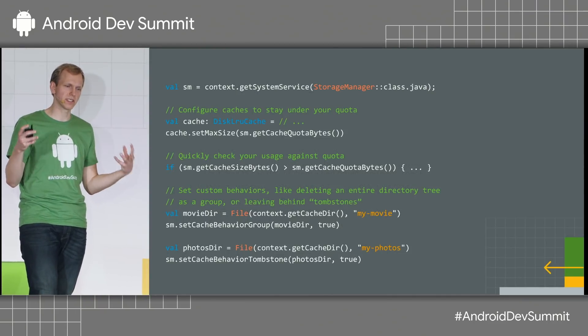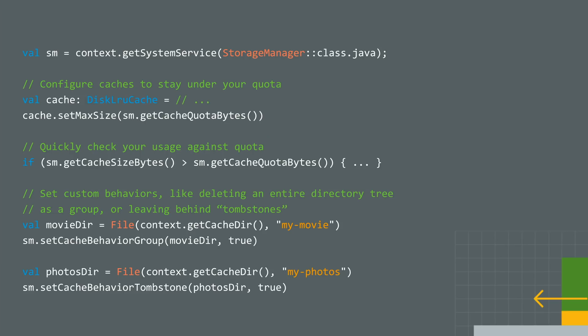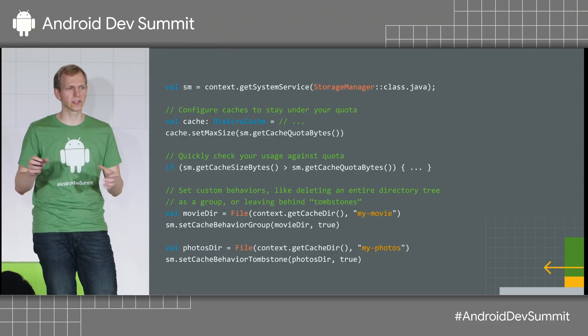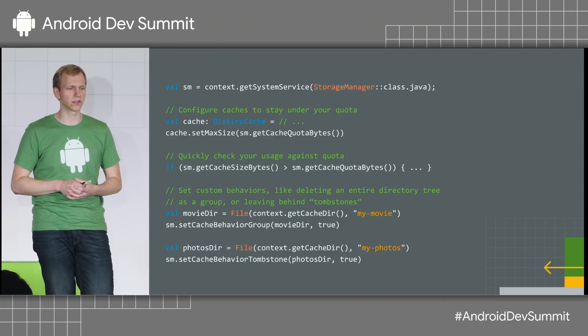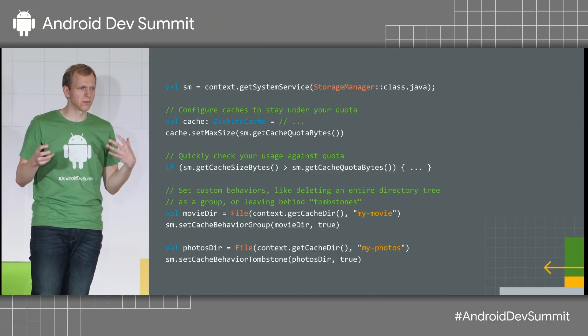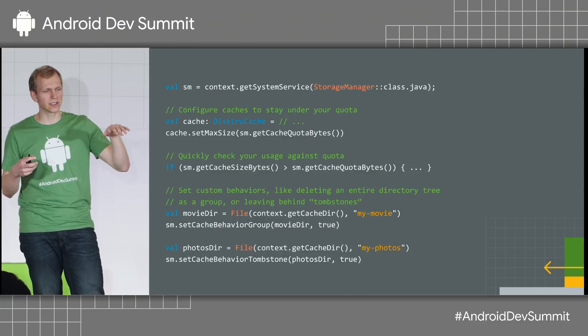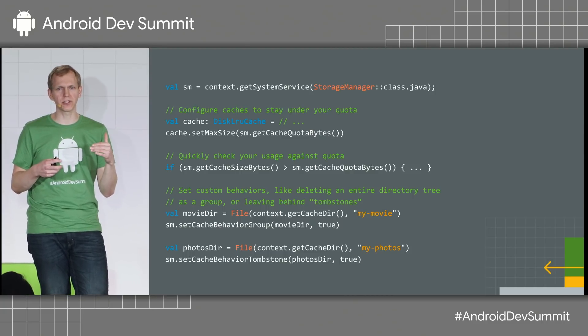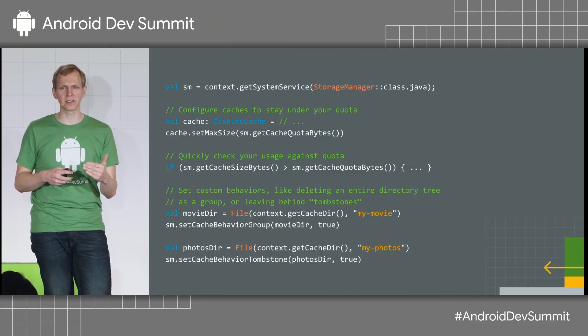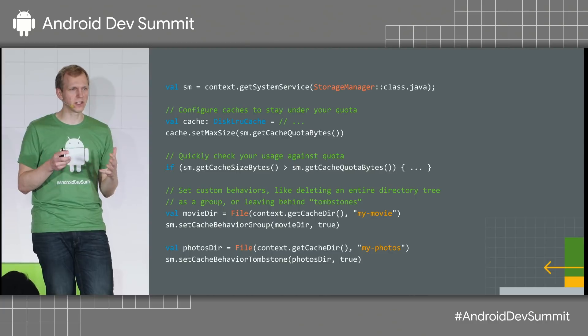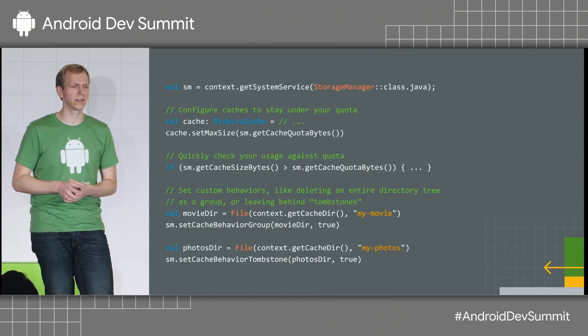For code integration, if you're using a class like DiskLruCache, you can ask the OS for the recommended cache quota bytes and plug it straight into DiskLruCache to trim how much size it's using. If you have multiple types of caches, it's up to you to distribute that quota among your app's internals. There's also a getCacheSizeBytes method — a fast optimized call to check how much cache space your app is currently using, faster than iterating over disk usage yourself.